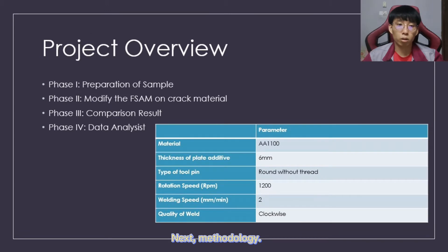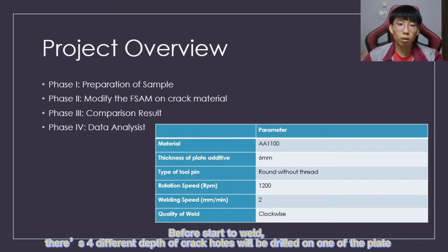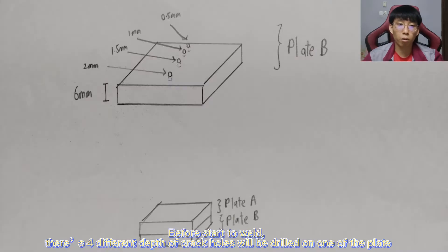Next, methodology. For the experiment setup, one CNC machine, one tool with two pins, two pieces of AA1100 aluminum plates, and one jig are needed. Before starting to weld, four different depths of crack holes will be drilled on one of the plates.